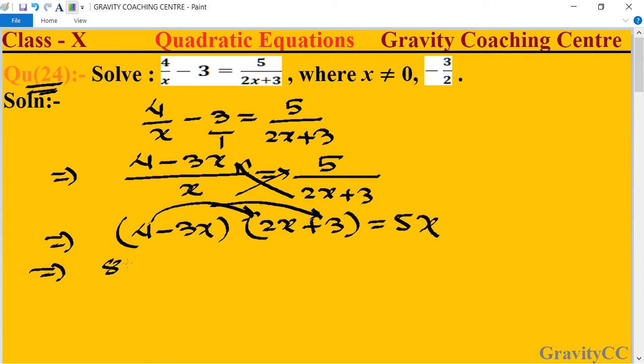Now we multiply: 4 times 2x gives 8x, 4 times 3 gives 12. Then -3x times 2x gives -6x², and -3x times 3 gives -9x. So we get 8x + 12 - 6x² - 9x = 5x.